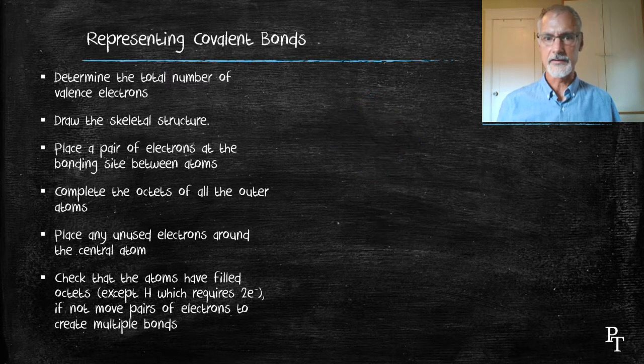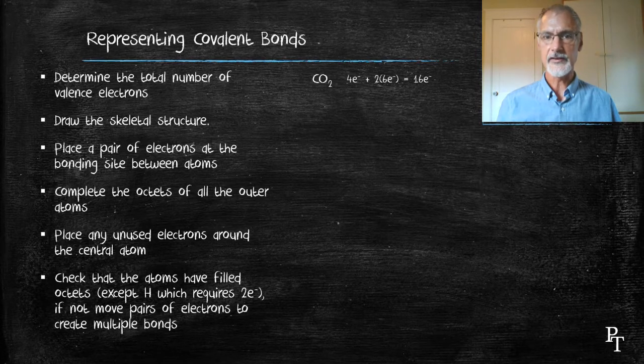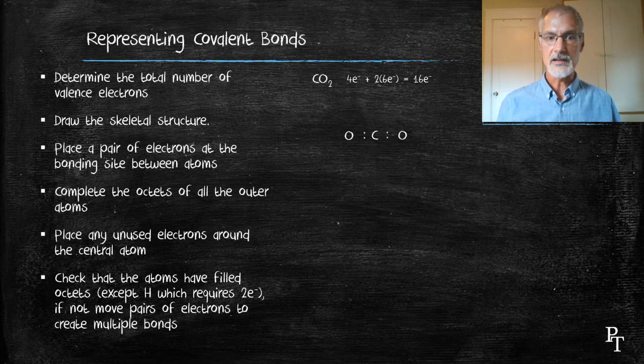Let's try carbon dioxide. Again, by consulting the periodic table, I determine the total number of valence electrons, 16 in this case. For the skeletal structure, I'll put carbon in the middle and the oxygens on either side. The first place the electrons go is between the atoms. Then I complete the octets of the atoms on the outside.